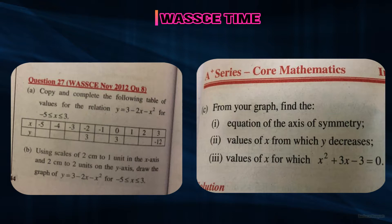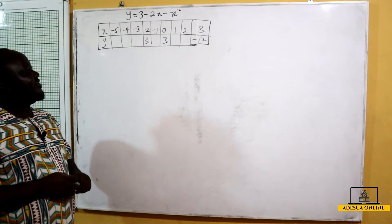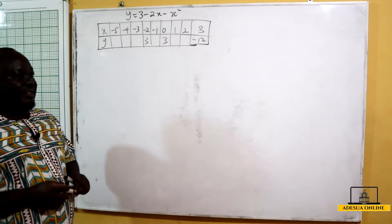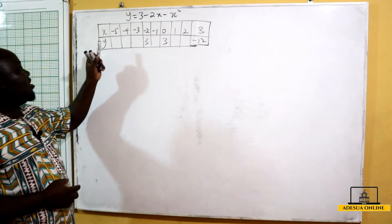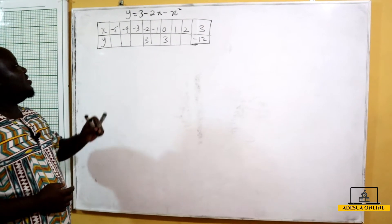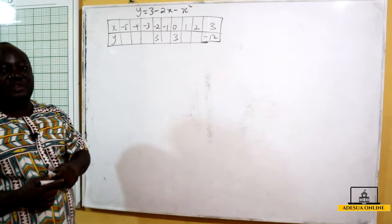We are going to start by first drawing the table and fixing in the values of x to get the corresponding values of y. From the table, we don't know the value at x equals negative 5, so we are going to substitute x equals negative 5 to get the corresponding value of y.